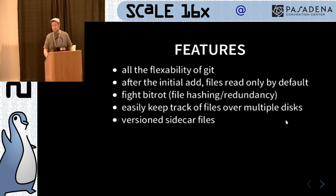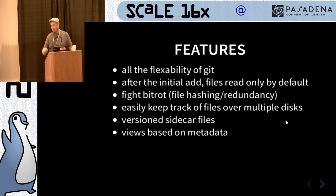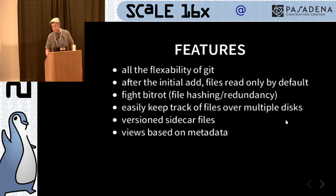Versioning sidecar files is awesome. If you've ever had an application decide it was going to spew a bunch of junk into your sidecar files — previously I had no way to go back, but now I do, and that has saved me a lot of time. In Git Annex you can have views based on metadata. When you git annex add, a script will run that uses ExifTool, and then you can tell it what metadata fields you want to put into Git Annex. Then you can say: show me all my ISO 100 pictures, show me everything shot at f/2, and pretty much any other IPTC metadata field you can sort and show.